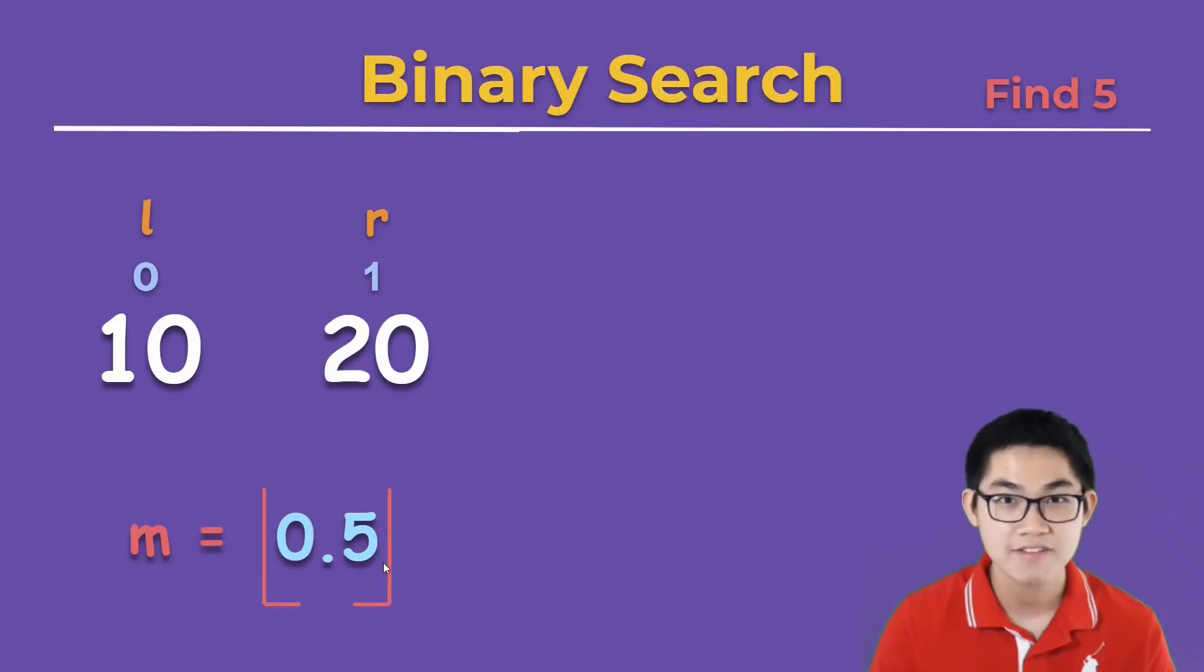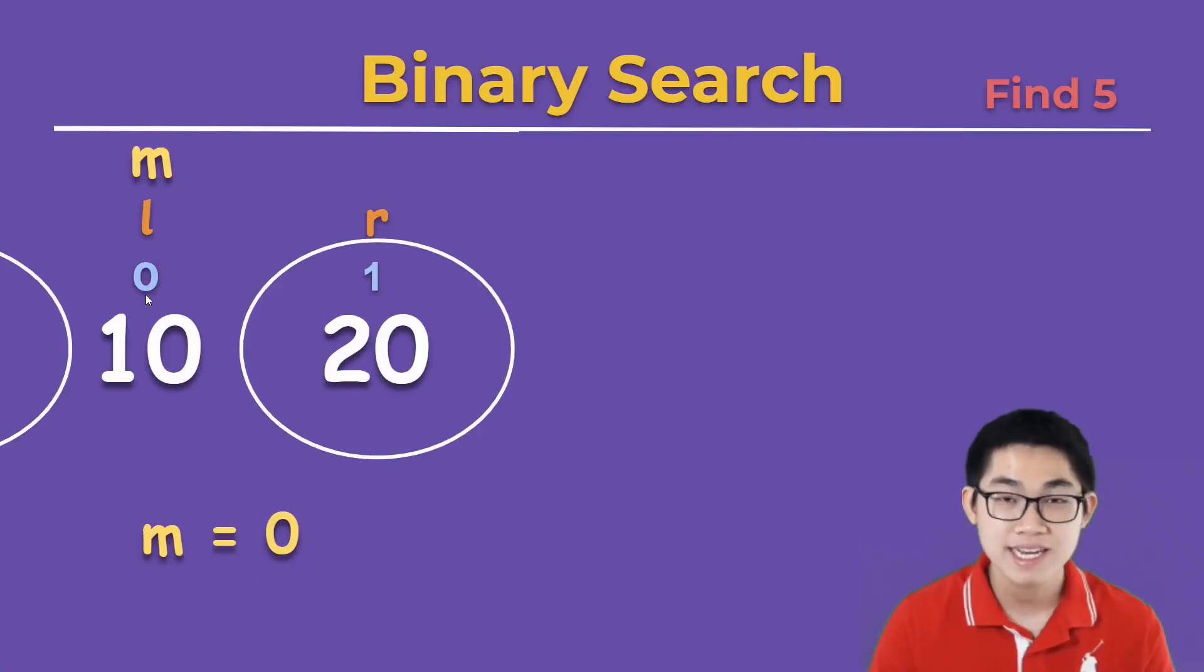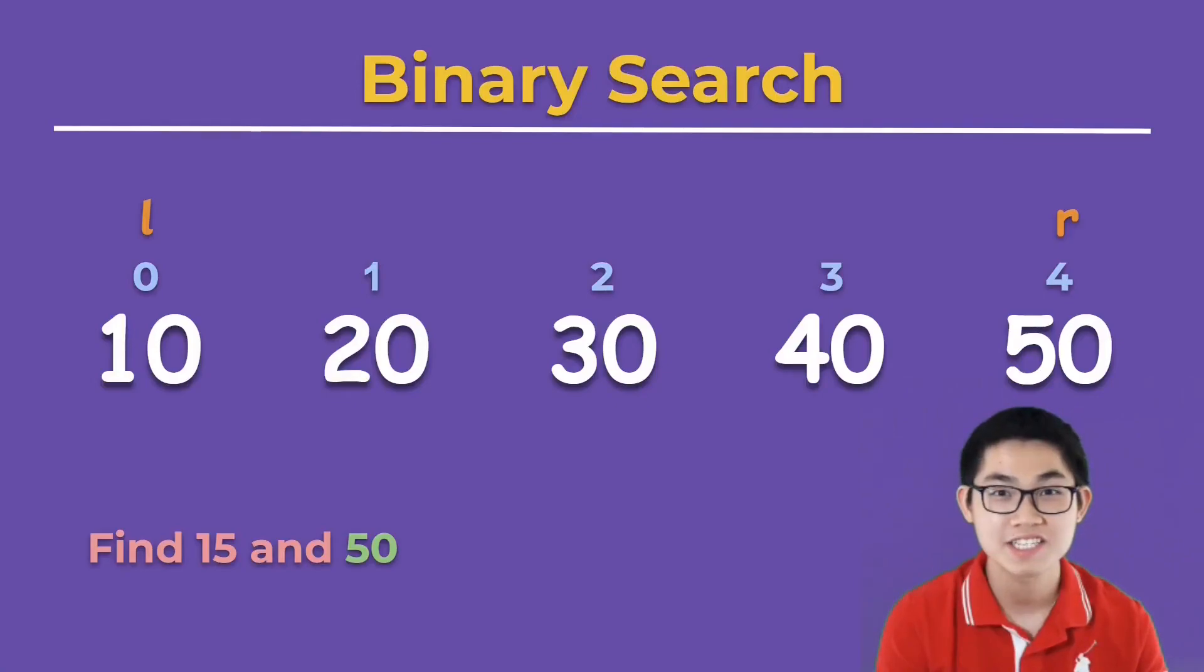Then you round down to 0 and we split the array into two groups again. The first thing I'm going to do is check the number at mid. 5 is smaller than 10, so we move R over to this side. Now notice when R is to the left of L, this indicates that number 5 does not exist inside the array. In this case you can either return false or minus 1.